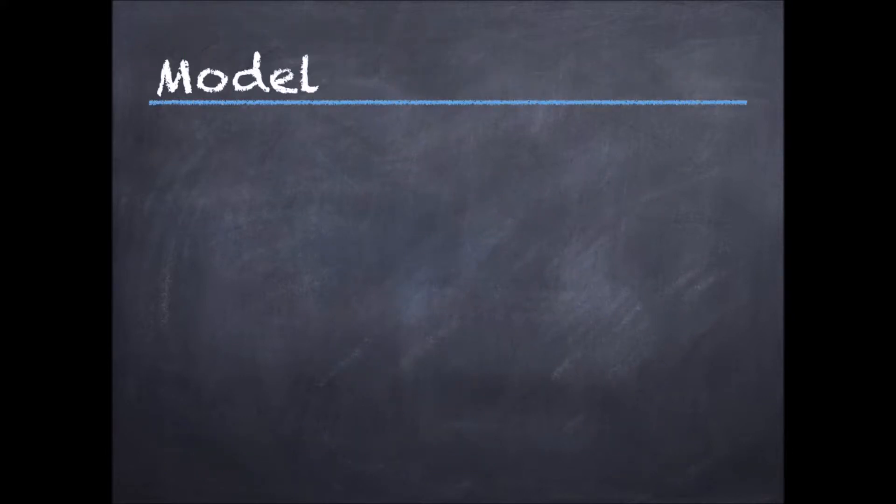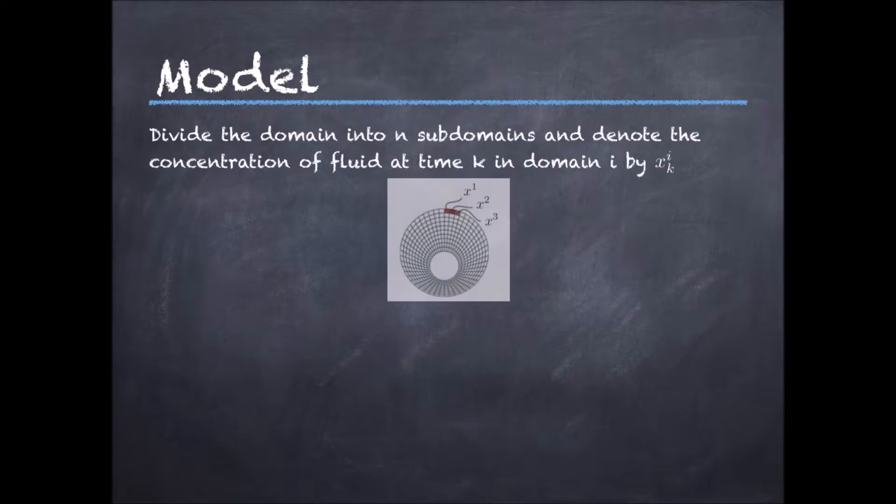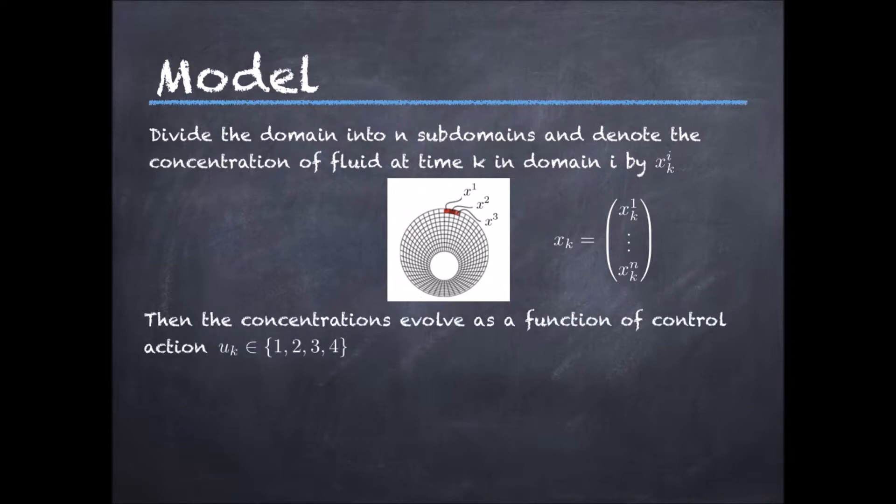To model this process, we can divide the domain of the container into many small subdomains, say n subdomains. Then we can consider a big state vector x. Each component of x denotes the concentration of the pink fluid in a given domain. We add the subindex k to denote the concentrations of the fluid at time k. Then one can show that the vector of concentrations evolves with time as a linear system which depends on the control action applied.